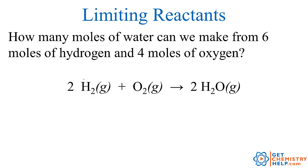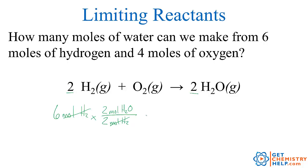Let's do an example with chemistry. In our reaction, they ask how many moles of water can we make from six moles of hydrogen and four moles of oxygen? We're going to do the calculation twice. First, I'll take six moles of hydrogen to see how much water that lets me make. I'm trying to relate moles of hydrogen to moles of water. From the stoichiometric ratio, for every two moles of hydrogen I produce two moles of water. So that shows me that six moles of hydrogen lets me produce six moles of water.